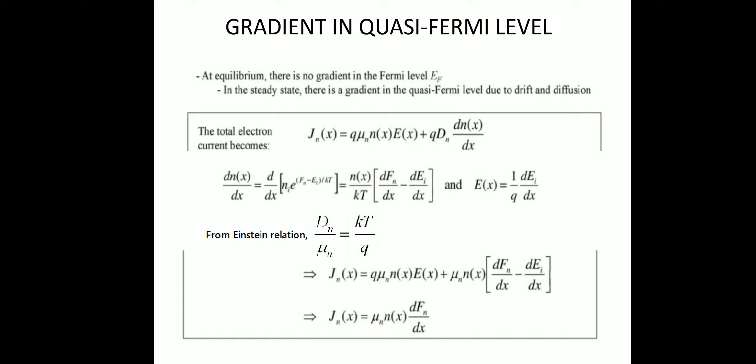The gradient in quasi Fermi level states that under steady state condition, there is a gradient in the quasi Fermi level due to drift and diffusion. For a Fermi level at equilibrium, we already studied that there is no gradient — that means d/dx of Ef should be zero. But in the case of a quasi Fermi level, that condition does not hold. Under steady state, d/dx of Fn or d/dx of Fp exists, and that is due to drift and diffusion.